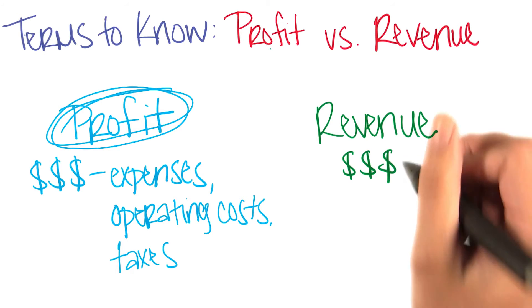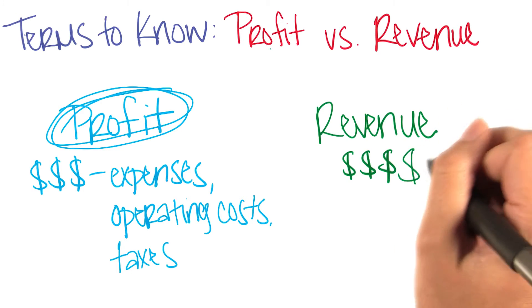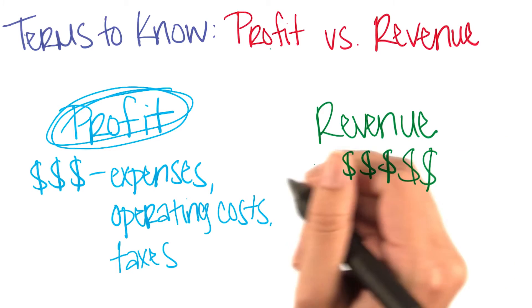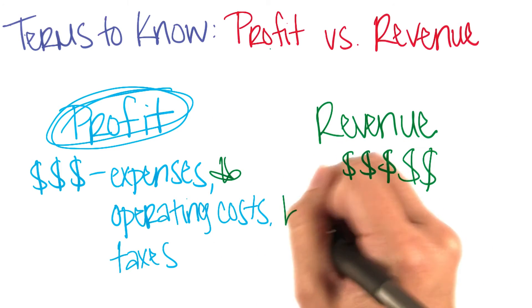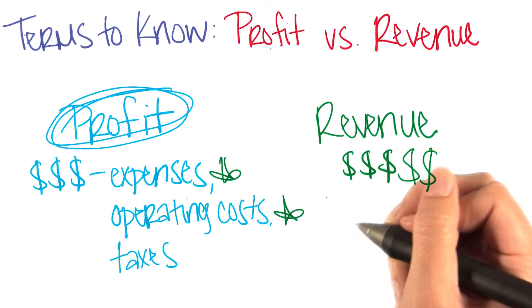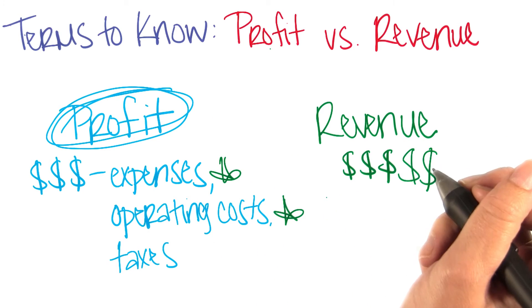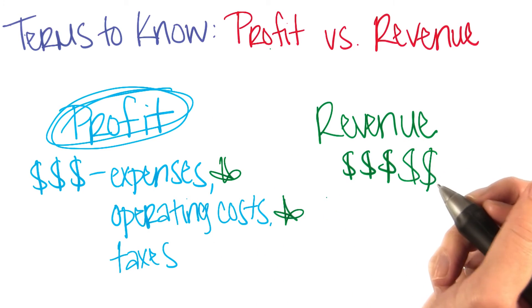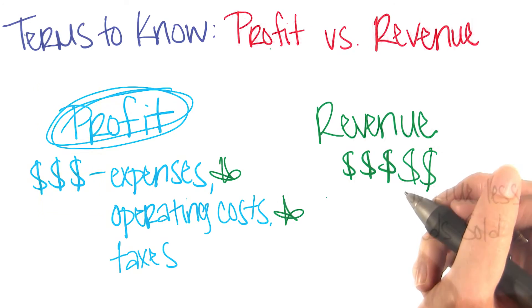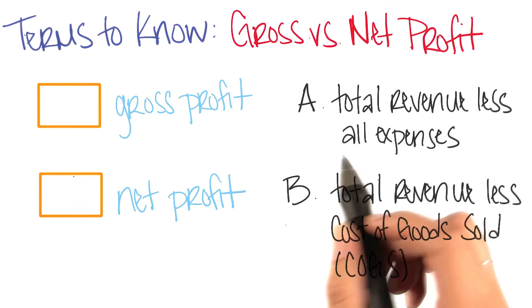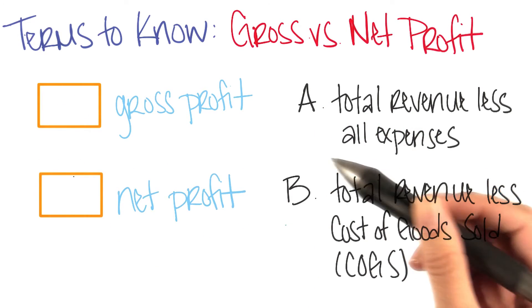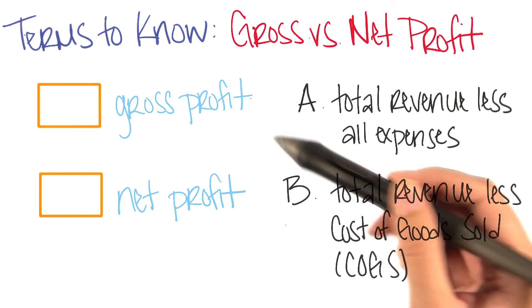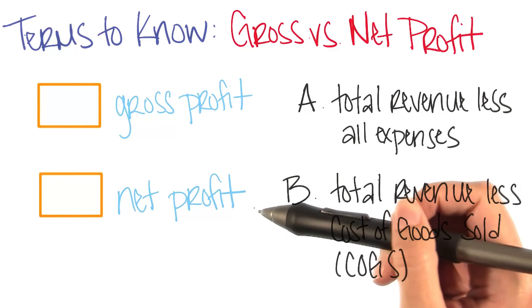If you're a business that maybe makes a lot of money, but your expenses and operating costs are eclipsing that, you can still go under. Now, there are even further distinctions between types of profit: gross and net.